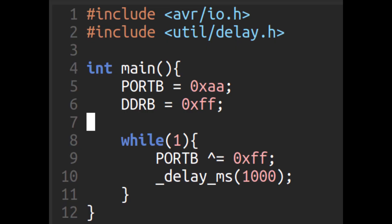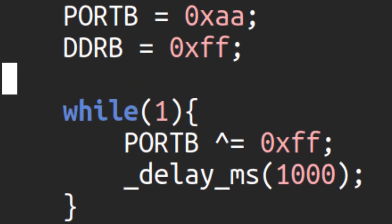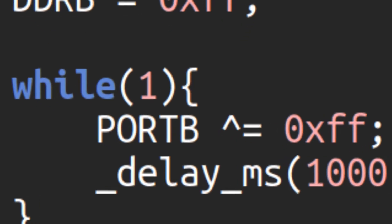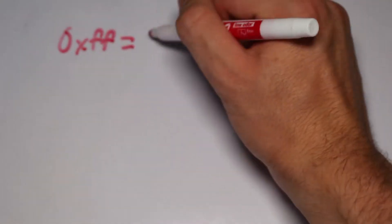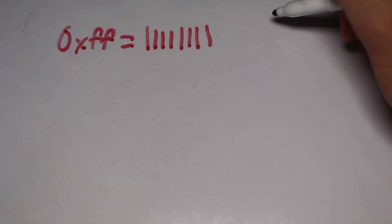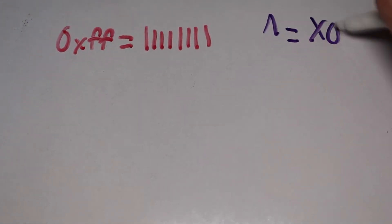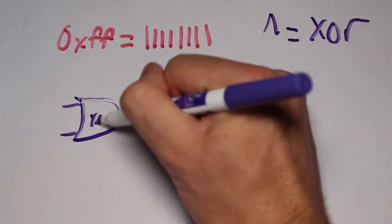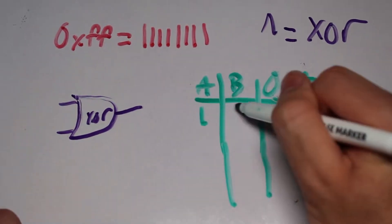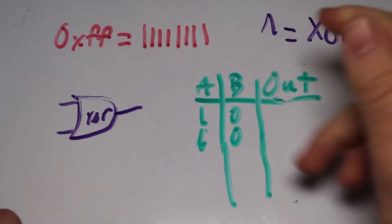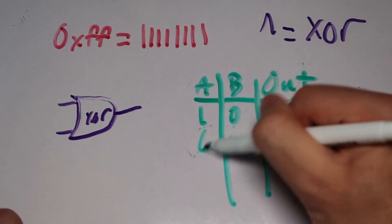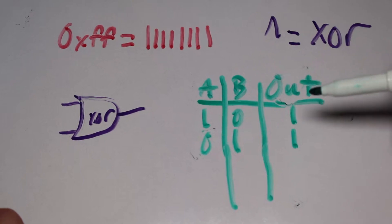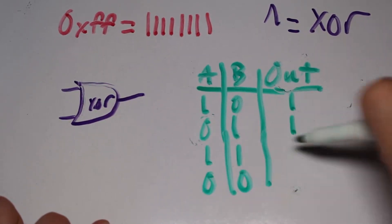Now, let's continue on with the code. Once we enter the loop, the first instruction deals with the port register. This line of code basically reads like this: Port B equals Port B exclusive OR'd to 0xFF. Remember that 0xFF is 8 bits of 1s. If you are unaware of bitwise operators, the caret is the exclusive OR operator. An exclusive OR is a logic gate — when the first input is a 1 and the other is a 0, the output is a 1. However, if both of the inputs are 1, the output is a 0, or if both the inputs are 0, the output is also 0.